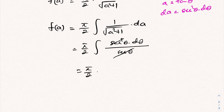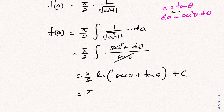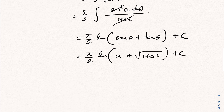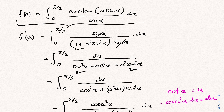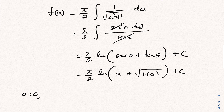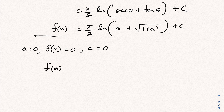The integral of sec θ is ln|sec θ + tan θ| + C. Converting back: tan θ = a and sec θ = √(1 + a²). So F(a) = (π/2)·ln(a + √(1 + a²)) + C. When a = 0, F(0) = 0 (since arctan(0) = 0), which gives C = 0.